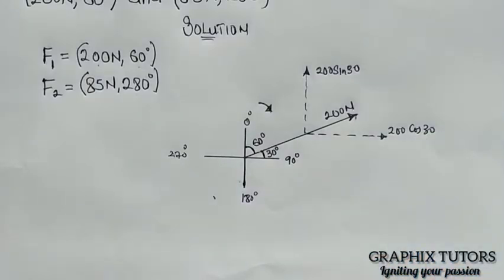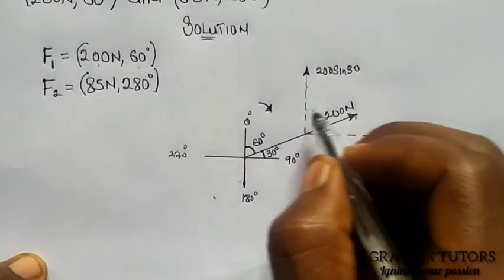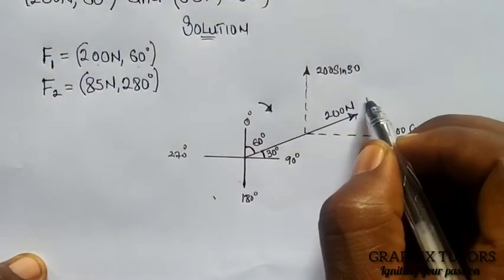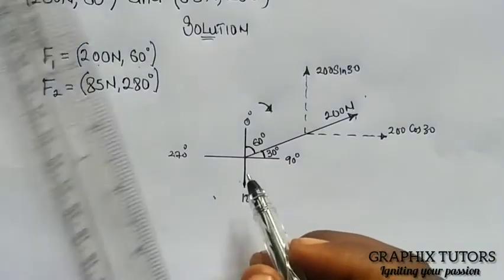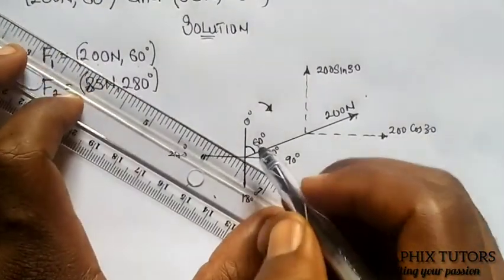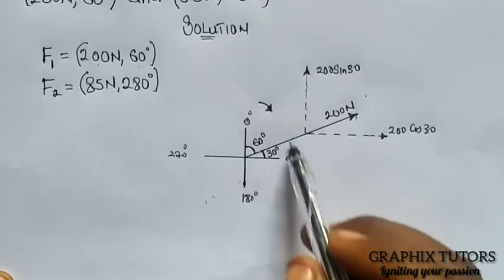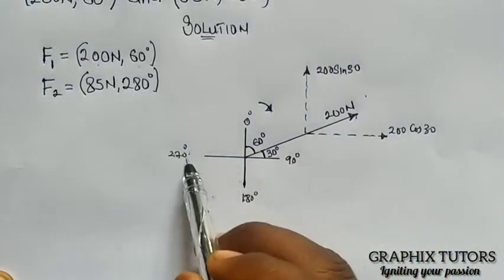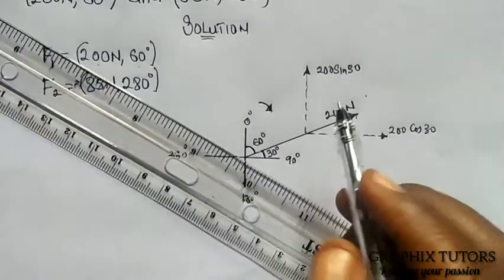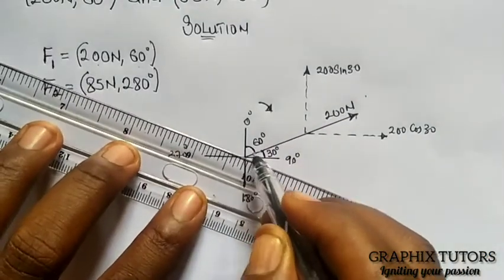Also, we have my force 2. We're having 280. If I move to here, it's 90, this is 180, this is 270. So I need to add 10 to 270 to have 280. So the 10 degree will be somewhere around here.